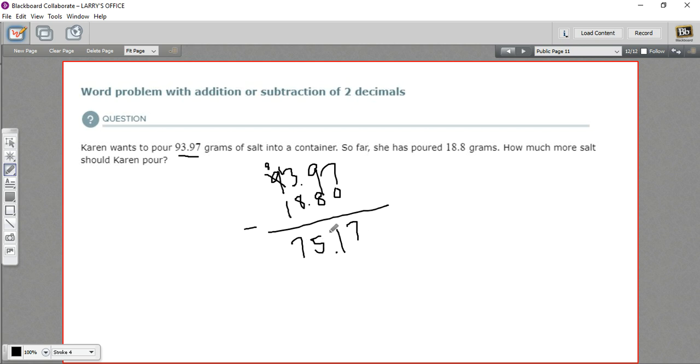So Karen still needs to pour 75.17 grams. And you can double check that by adding 18.8 to 75.17 and you should get 93.97 grams. So that is a little word problem with subtraction of decimals.